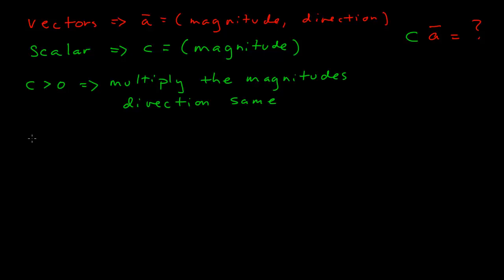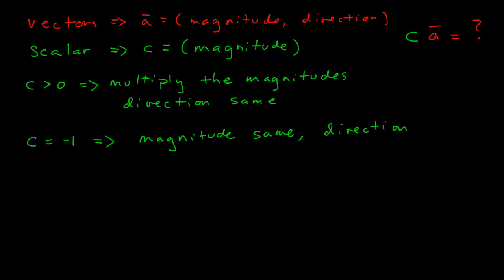In the case where c, the scalar, is equal to negative one, the magnitude is the same but the direction switches. So when the scalar is negative one, the magnitude is the same as before but it now points in the opposite direction. Before we go further, let's take a look at these two examples.